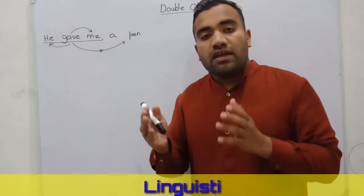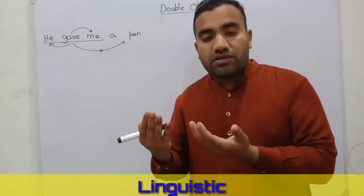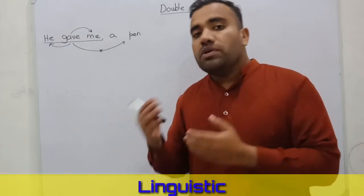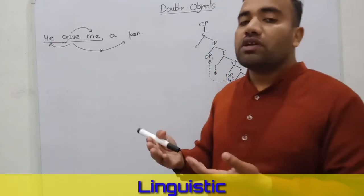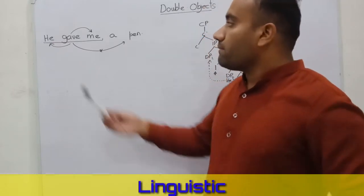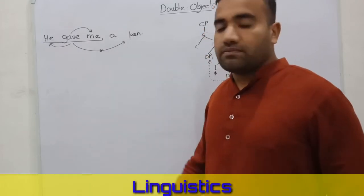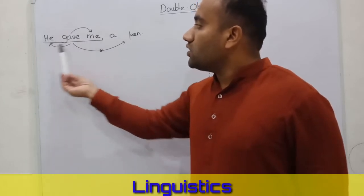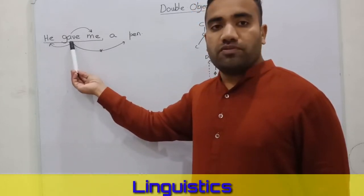The Locality Principle states that all operations will be within the local domain. If we want to deal with the double object construction — for example, 'he gave me a pen' — we have the local domain. This is the local domain of this structure.